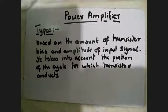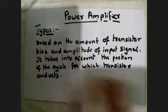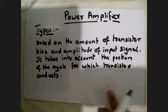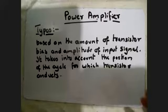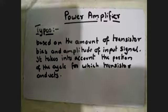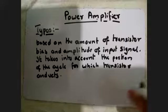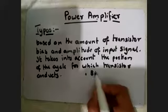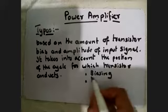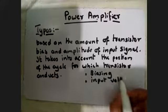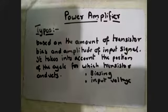Transistor ki conduction — as you know, amplifier ka main component transistor hota hai. So transistor ki conduction kis amount pe hogi, uski biasing kaisi ki gayi hai, aur input voltage kitna supply kiya ja raha hai — uske amplitude pe depend karta hai.